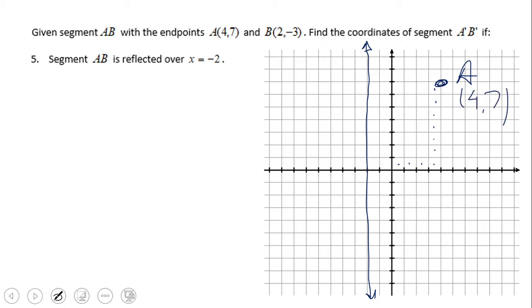So this is point A (4, 7). We want to reflect it over x equals negative two. We're going to count how far away point A is from the line of reflection, which is six units away. We're going to keep moving six units away. Negative eight and seven. Go ahead and try to do point B. Pause the video clip and let's see what you get.